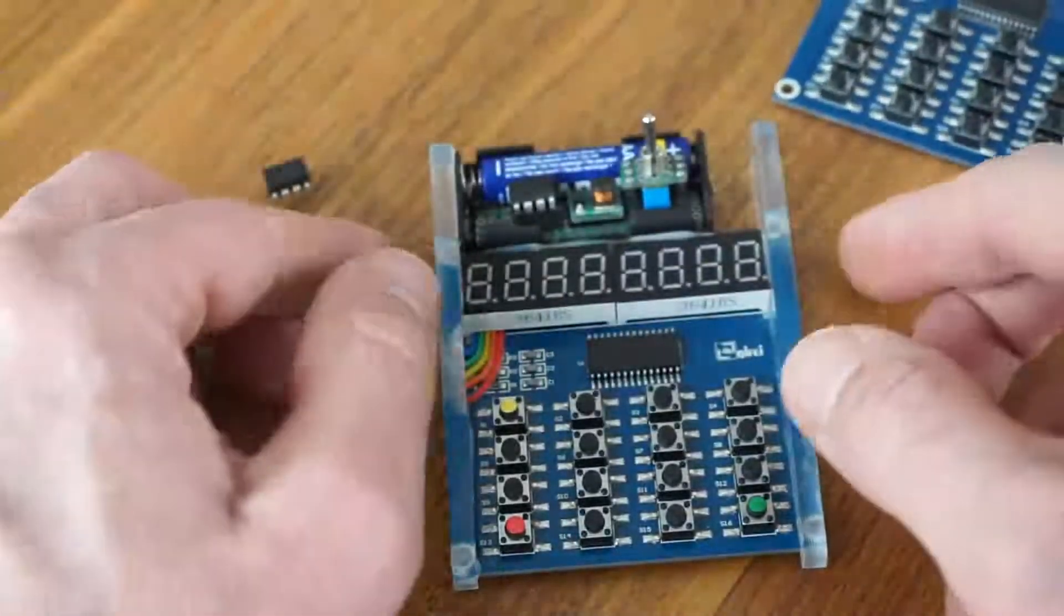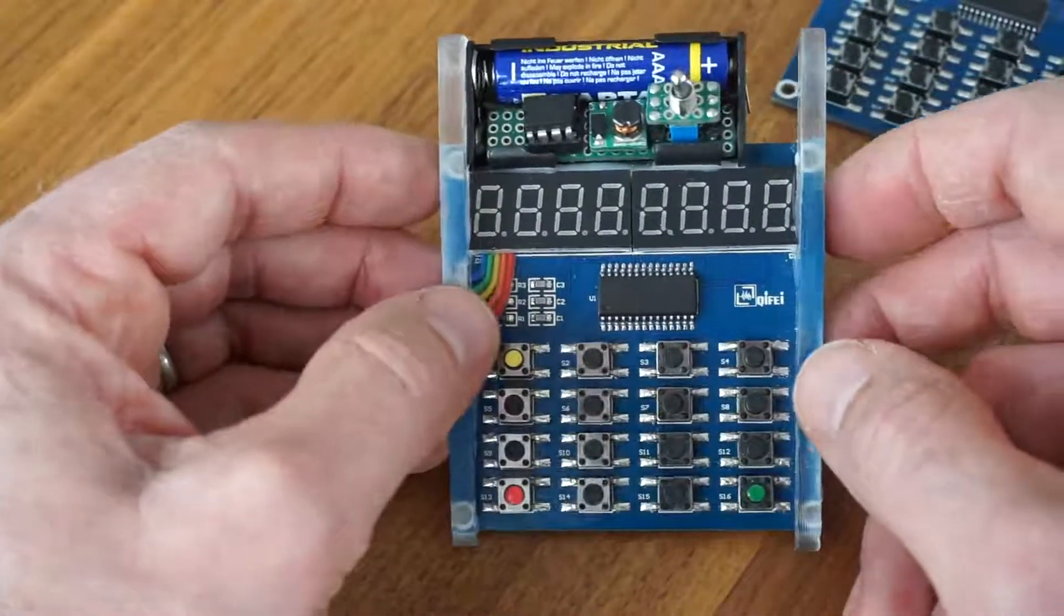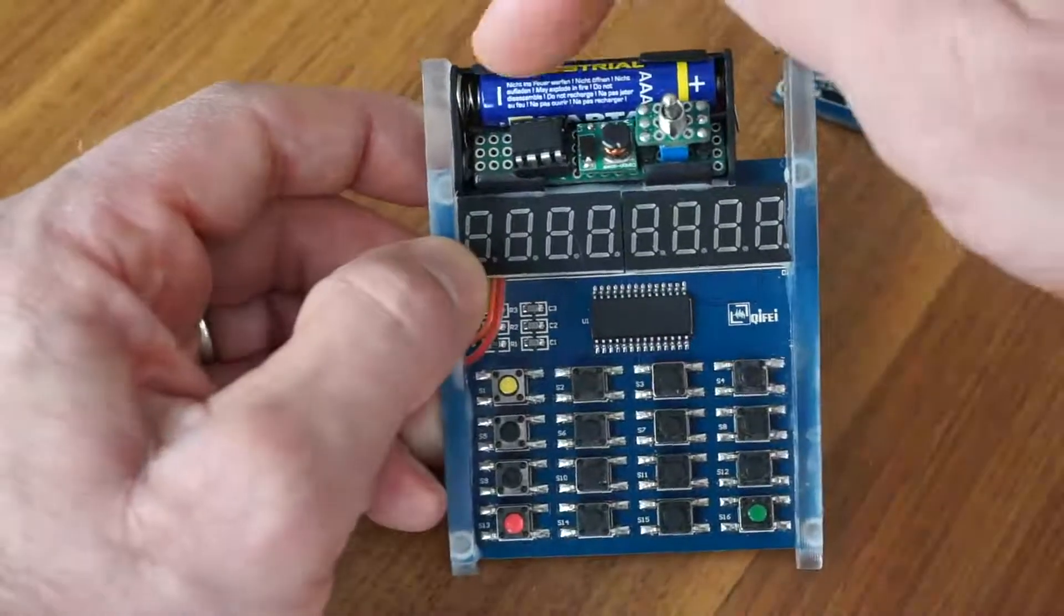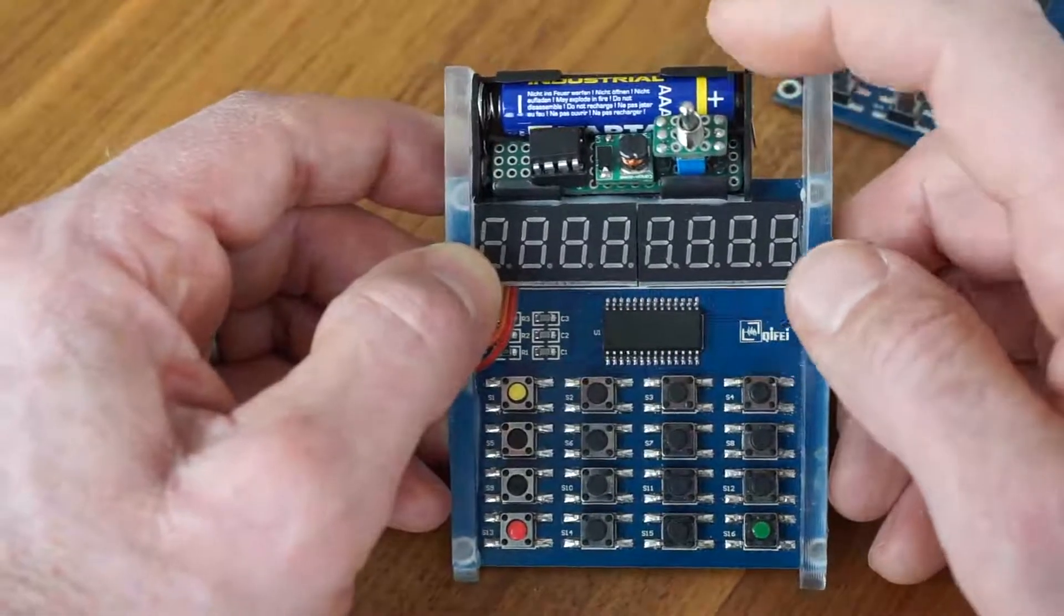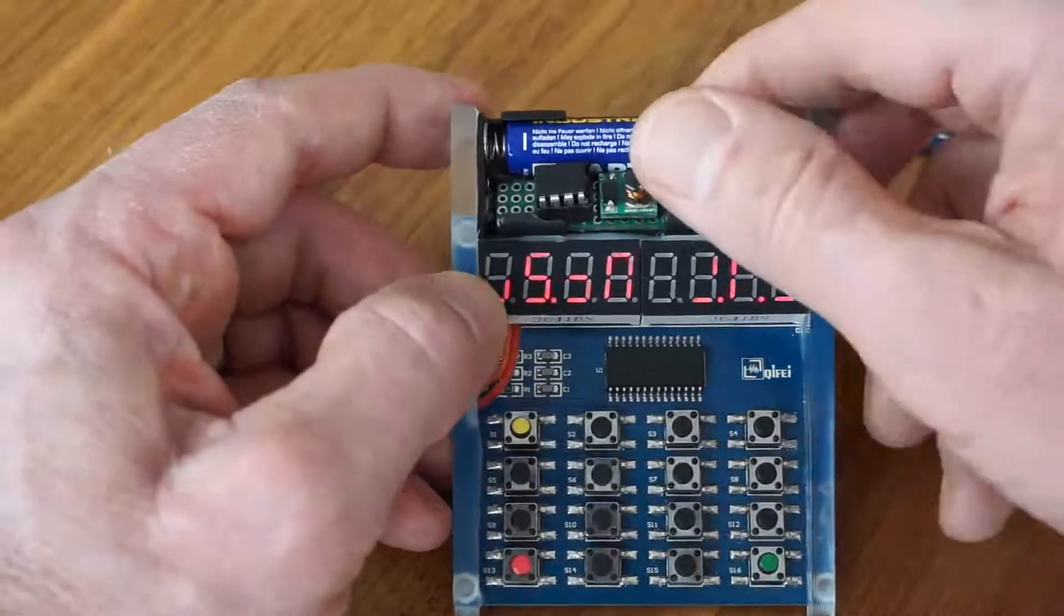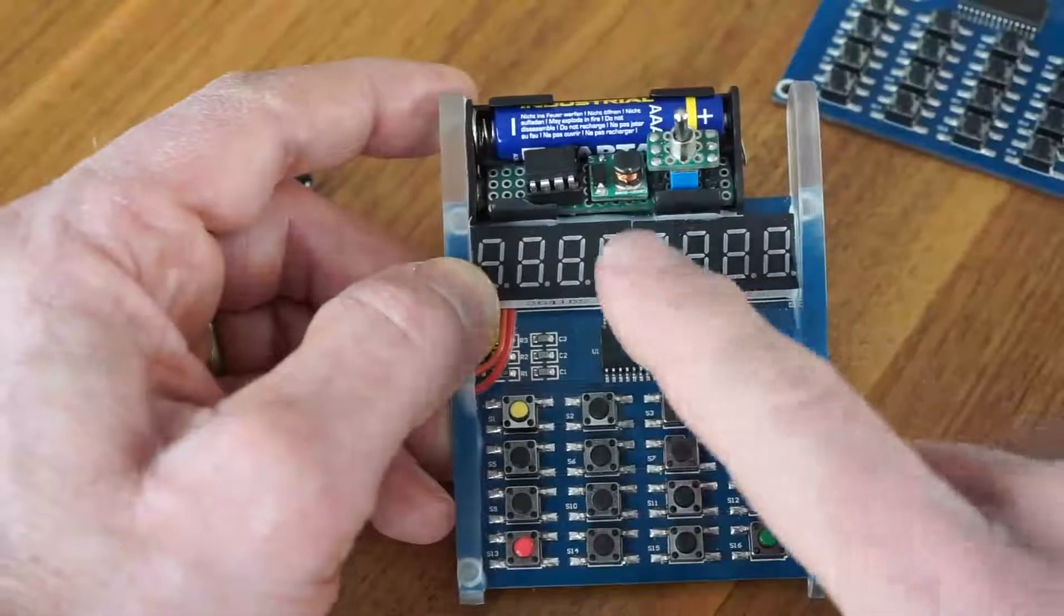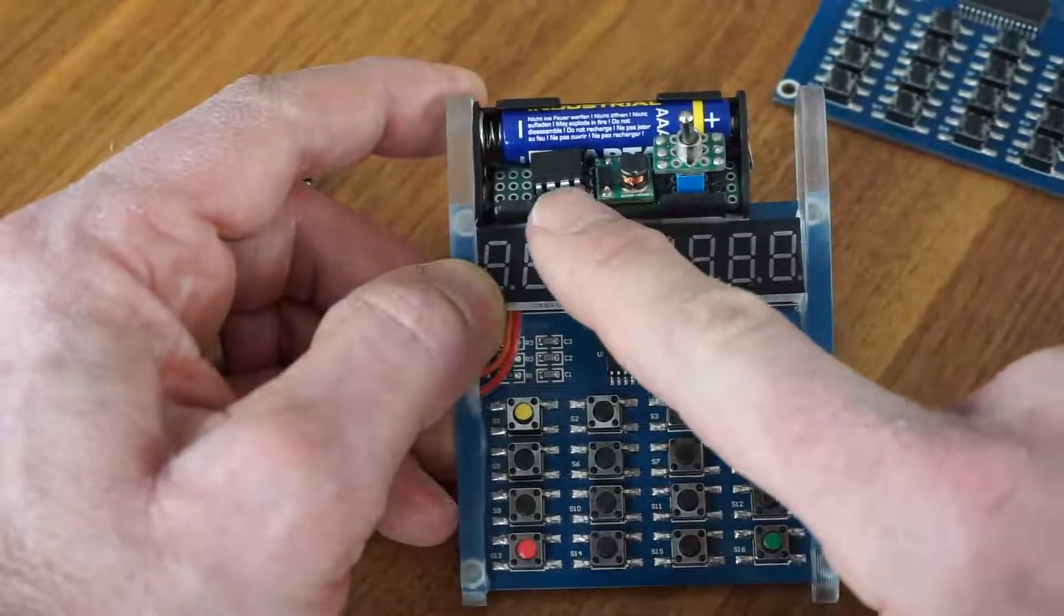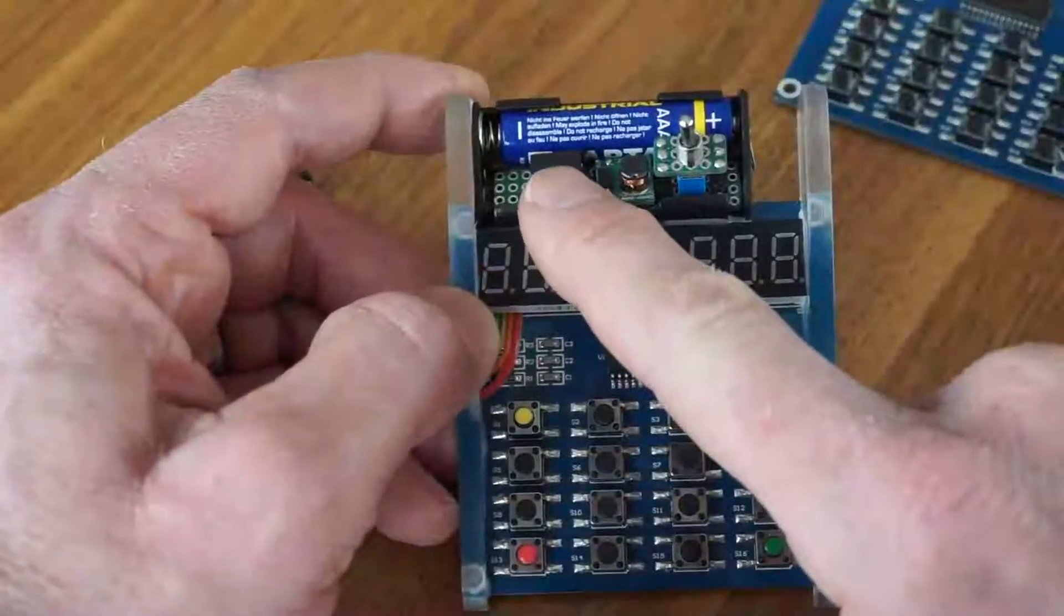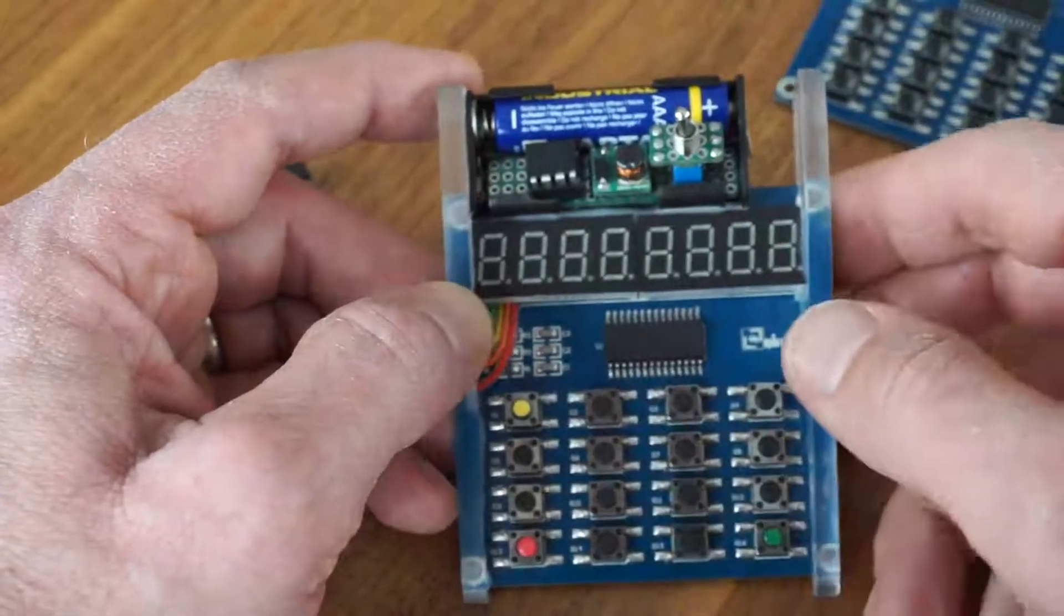So the finished hardware could look like this. You see the battery, it's only a 1.5V AAA battery, one on-off switch, a voltage booster which boosts the 1.5 volts up to 5 volts, and this ATtiny which controls the development board.